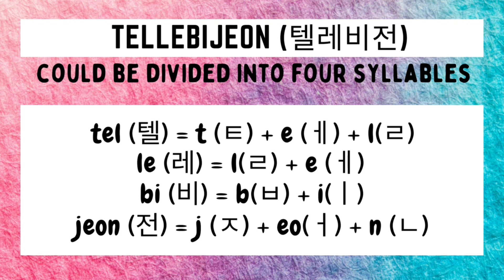How do we write TELEBIJON in Hangul? It is composed of four syllables. For the first syllable TEL, we need to draw a TEAD character, followed by an E character, followed by a REAL character. For the second syllable LE, we need a REAL character followed by an E character. For the third syllable BI, we need a VIP character followed by an E character. And for the last syllable JON, we need a GIAT character followed by an O character, followed by a NIAN character.